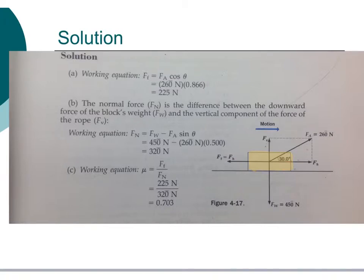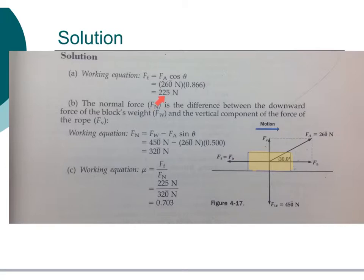In our solution, we begin by determining the horizontal component, which is the force of friction. The force of friction equals the force of the rope times the cosine of the angle. The force on the rope was 260 N times cosine of 30, which gives us a horizontal component of 225 N.